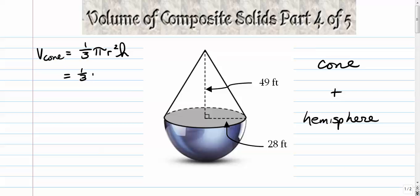And let's see, a third times pi, the radius is given 28 squared, and the height is given 2. Simple enough. So we're going to find that and we're going to add that to the volume of the hemisphere.